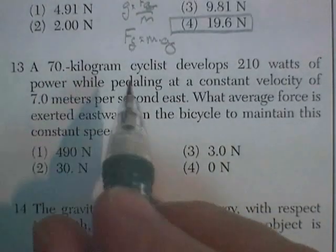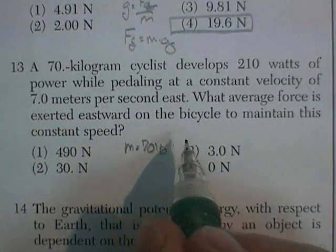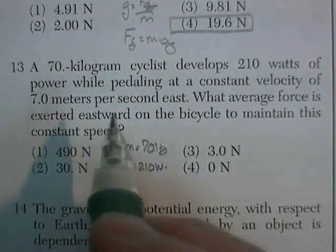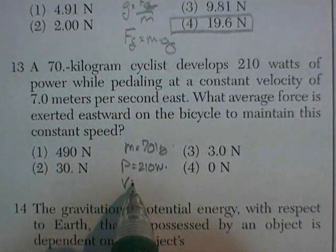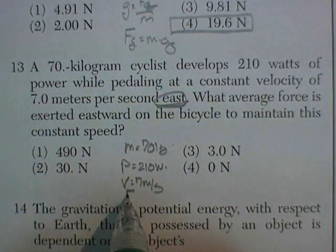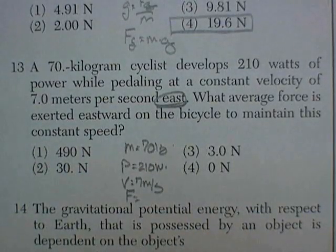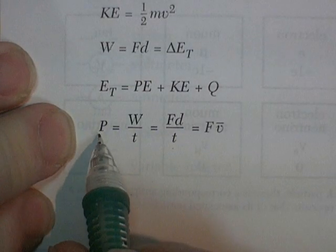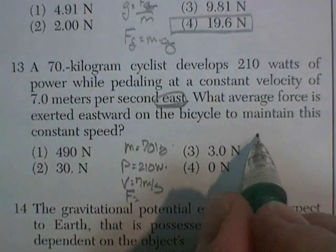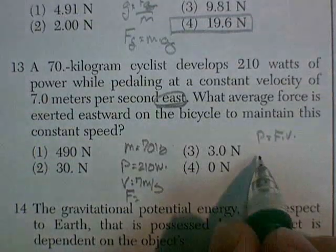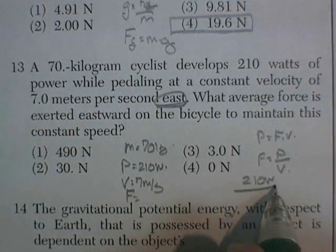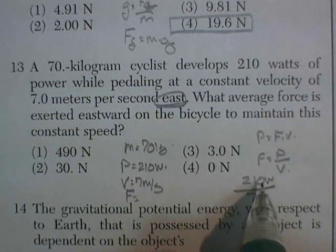Question 13. A 70 kilogram cyclist develops 210 watts of power, pedaling at a constant velocity of 7 meters per second going east. What average force is exerted on the bicycle to maintain this constant speed? There are several variations of the power equation. Work over time, force times distance over time, and force times velocity. We have velocity. So we can say power is equal to force times velocity. Or force is equal to power divided by velocity. So 210 watts divided by 7. That looks like 30 to me.